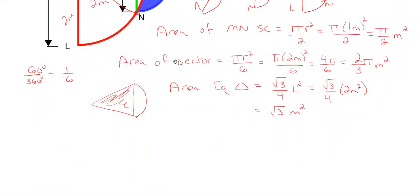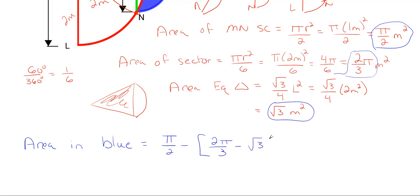So now I have my area of my sector and my area of my equilateral triangle, and I also have the total area from M to N, which is my semicircle. So let's go ahead and let's work this out here. So the total area in blue will be the area of my original semicircle, which is π over 2, and then we are going to subtract off my area of my sector, 2π over 3, subtracting off the area of my equilateral triangle, which is √3.